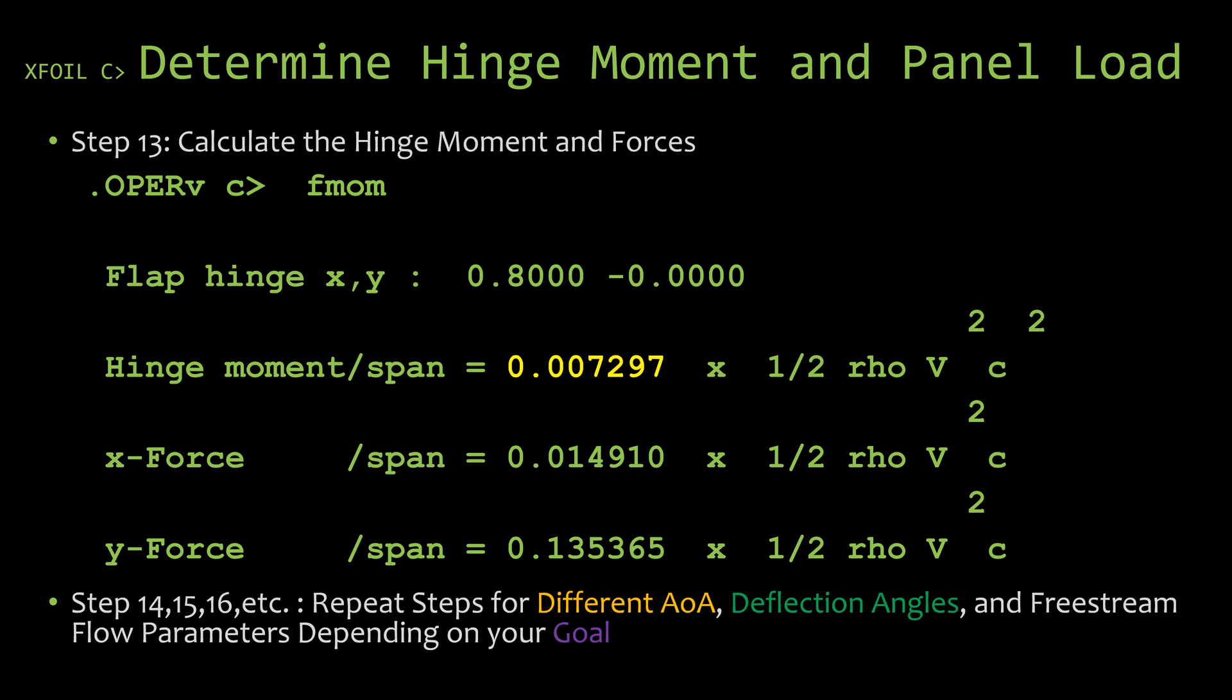Hopefully that looks familiar to you from a couple slides ago. In my equation, I used the planform area S. If you assume the control surface is rectangular, then the planform area can be replaced with the span times the chord of the control surface. The span went with the hinge moment to the left side, and the chord from the planform area combined with the other chord to give us c-squared in this equation.